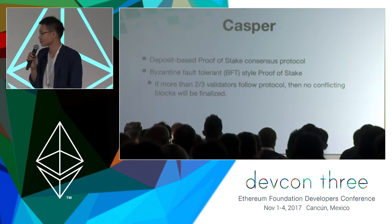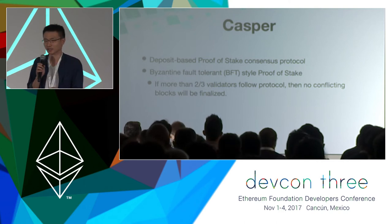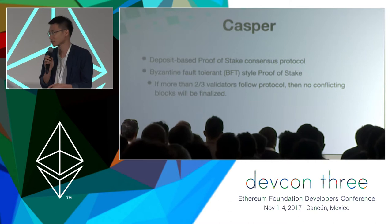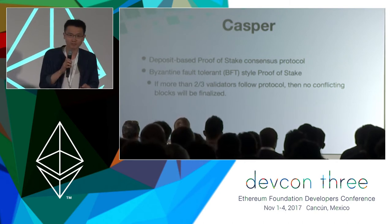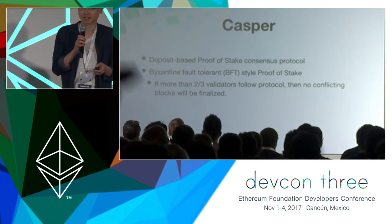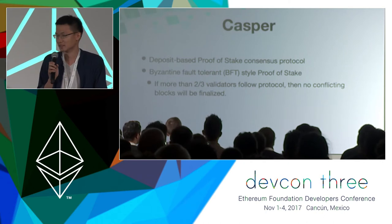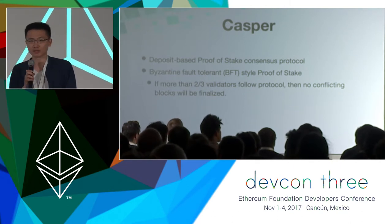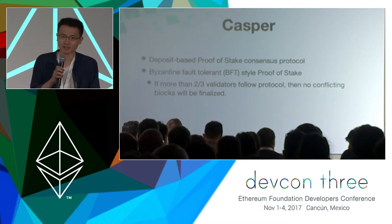So why CASPER? CASPER is actually a next generation consensus protocol in Ethereum. It's deposit-based, meaning you need to put your deposit into a smart contract to become a validator, and then you can start to vote for a particular checkpoint. If validators do some bad thing, we can delete their deposit. It's proof of stake based on Byzantine fault tolerance, so if more than two-thirds of validators follow the protocol, then no conflicting block will be finalized.